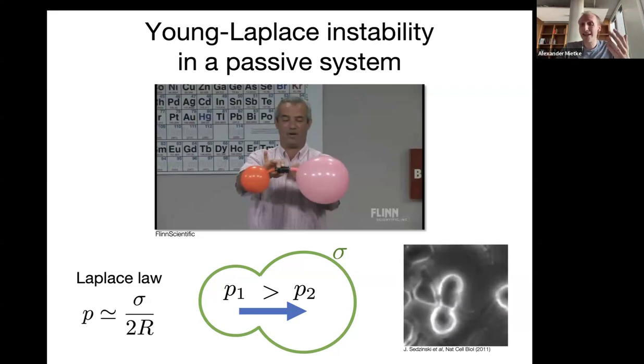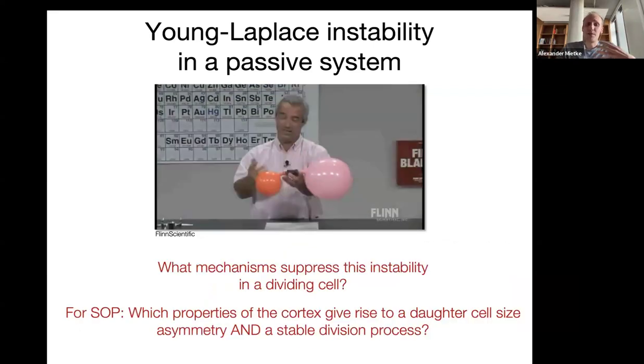This is even more fascinating if you now think about asymmetric cell division. The basic questions here are, first of all, very generically: How do dividing cells manage in general? What are the mechanisms? What are the mechanical features that allow a cell to still robustly divide despite in the background having this luring instability? And for this project here specifically, in the context of SOP, we can really look at the cortex in detail and ask what are the mechanical properties that A, realize this kind of asymmetry that we see, but doing this constrained in a way that actually the division process itself is stable.